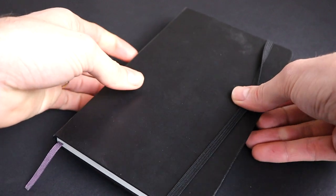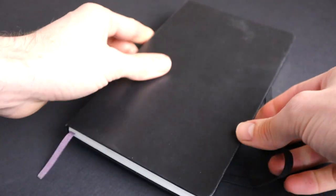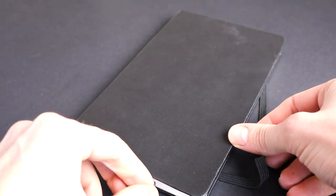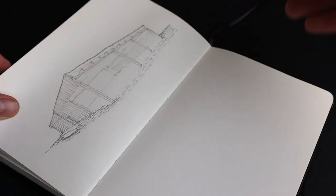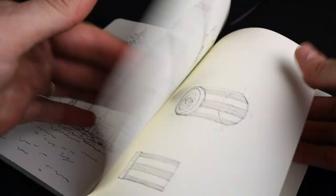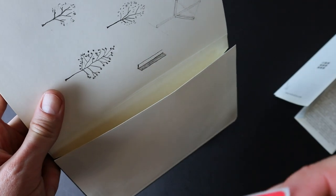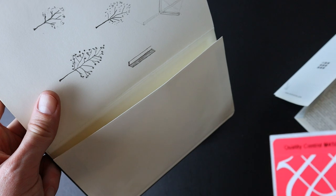The details look good too, like the rounded corners, the elastic closure, and bookmark ribbon. The 165g acid-free paper works fine for both pencil and pen. At the back, there's a handy expandable inner pocket, which is a great little storage area.